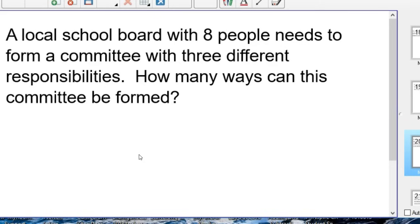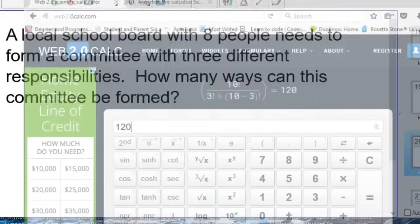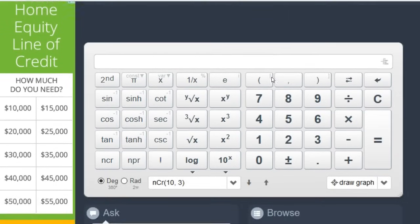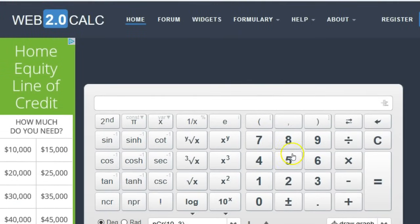Obviously, this is a permutation, which would be 8P3. So I'm just going to jump straight into, since we know it's a permutation, it would be 8 times 7 times 6. Or we could go ahead and use the Web 2.0 calculator just to show you kind of all the different possibilities. I mean, whatever you have for technology is great.